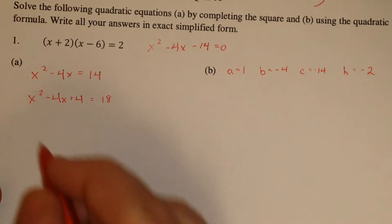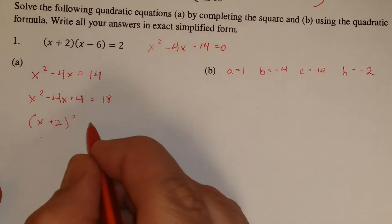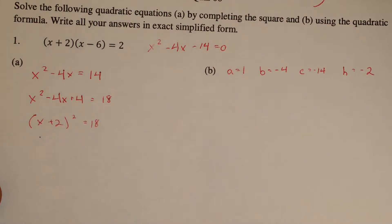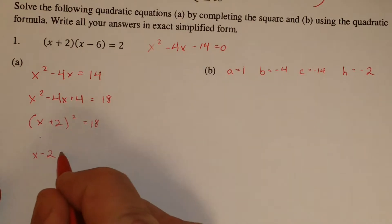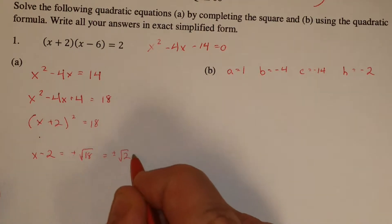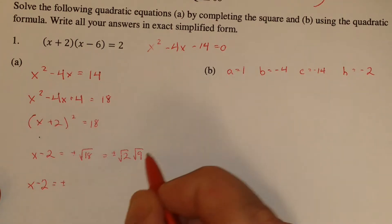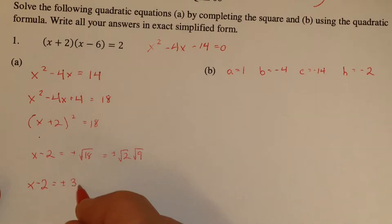Now the left-hand side's a perfect square. It's x minus h. h is negative 2, so it's really x plus 2 squared. Now we can apply a square root property. This needs a little bit of simplification, so this can be written as root 2, root 9. I'm trying to peel off any squares. So root 9 becomes 3. So it's plus or minus 3 root 2. Then we add the 2.